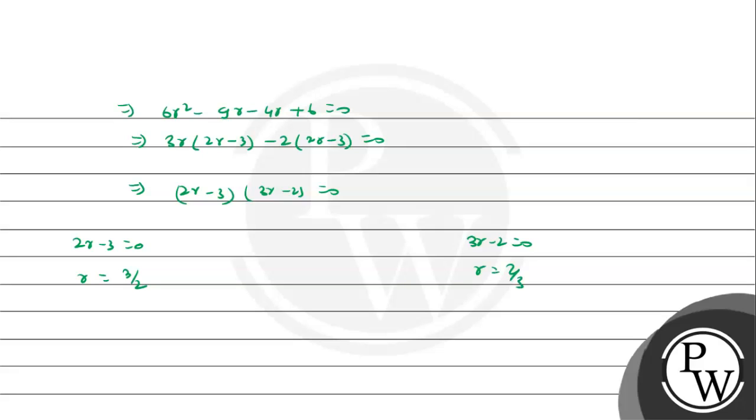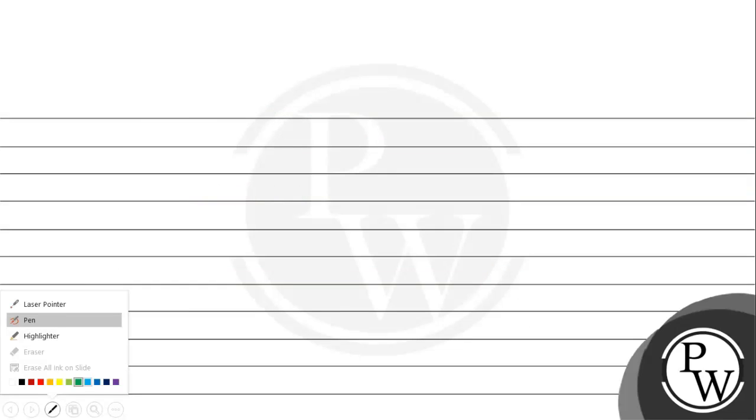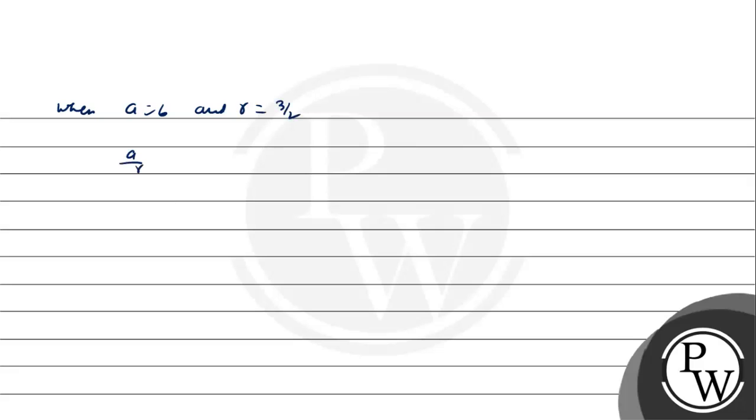So the value of R is 3 by 2 or 2 by 3, and value of A is already 6. In the first case when R equals 3 by 2, the numbers are 6 by 3 by 2 which is 4, then 6, and 6 into 3 by 2 which is 9. So the numbers are 4, 6, 9.